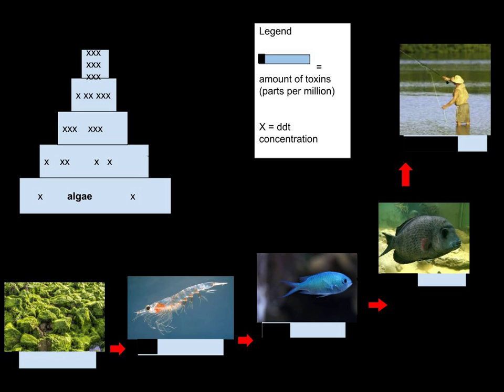Notable novel organic substances that biomagnify include DDT, hexachlorobenzene, PCBs, toxaphene, and monomethylmercury.